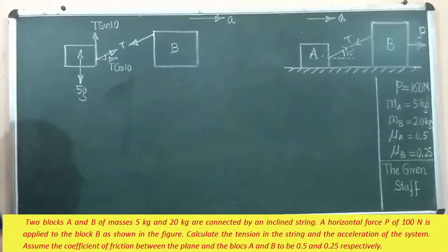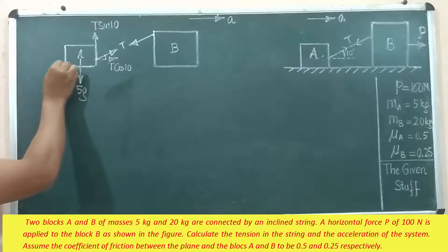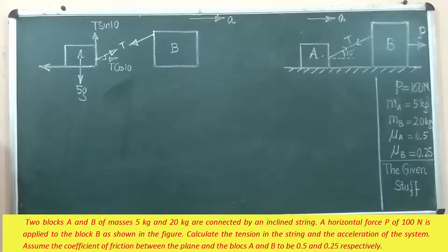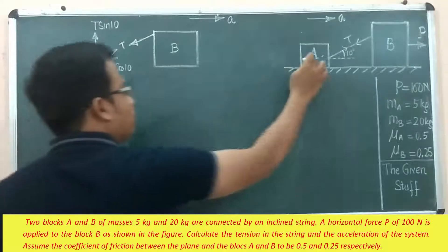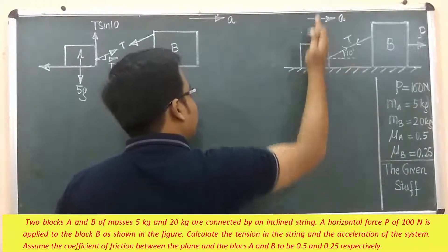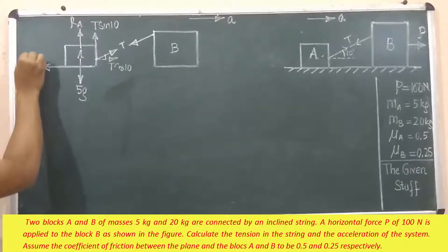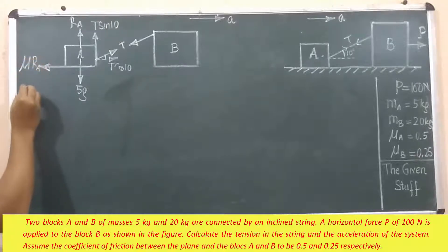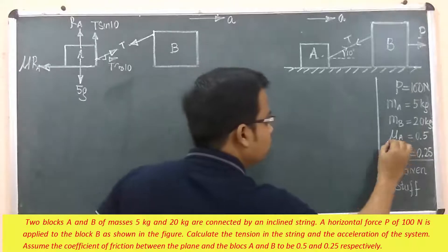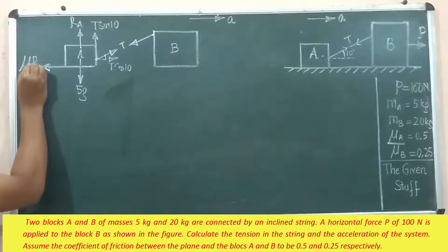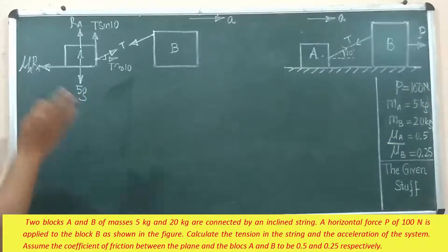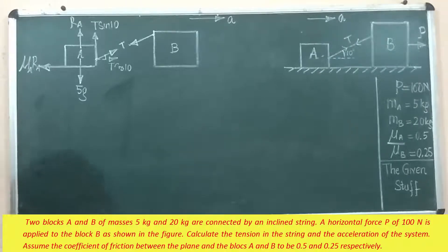We take into account both frictional forces. Block A sits on a horizontal surface, so the surface offers a normal reaction force R_A. The friction force is represented by μR, so for block A this is μ_A · R_A. Those are all the forces acting on block A.